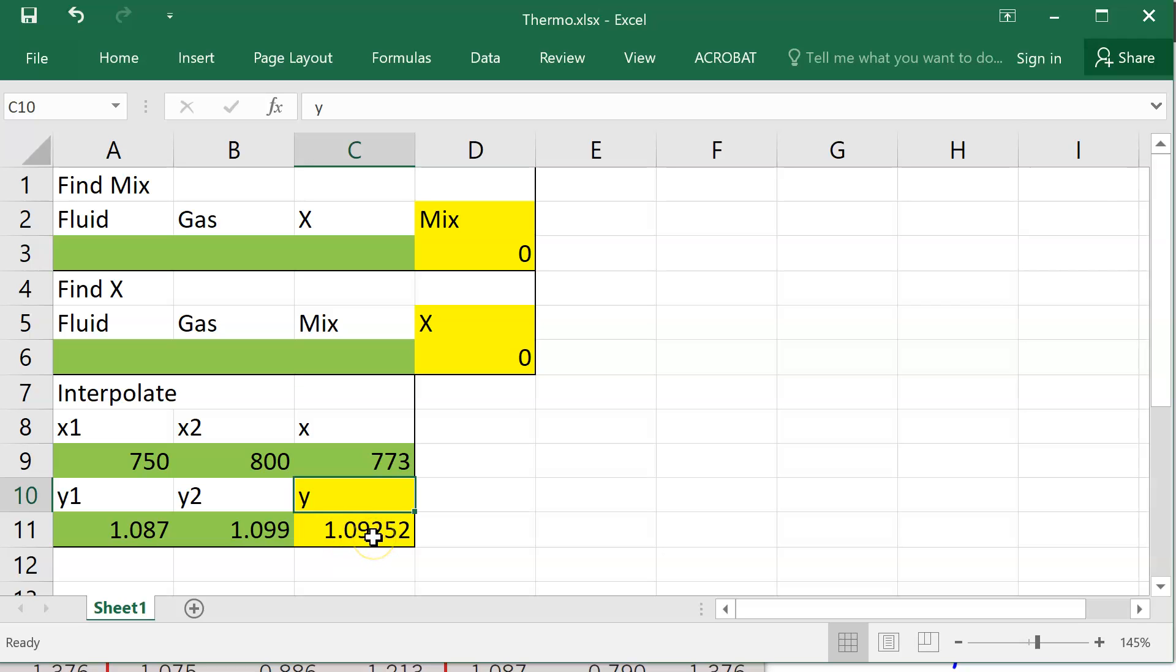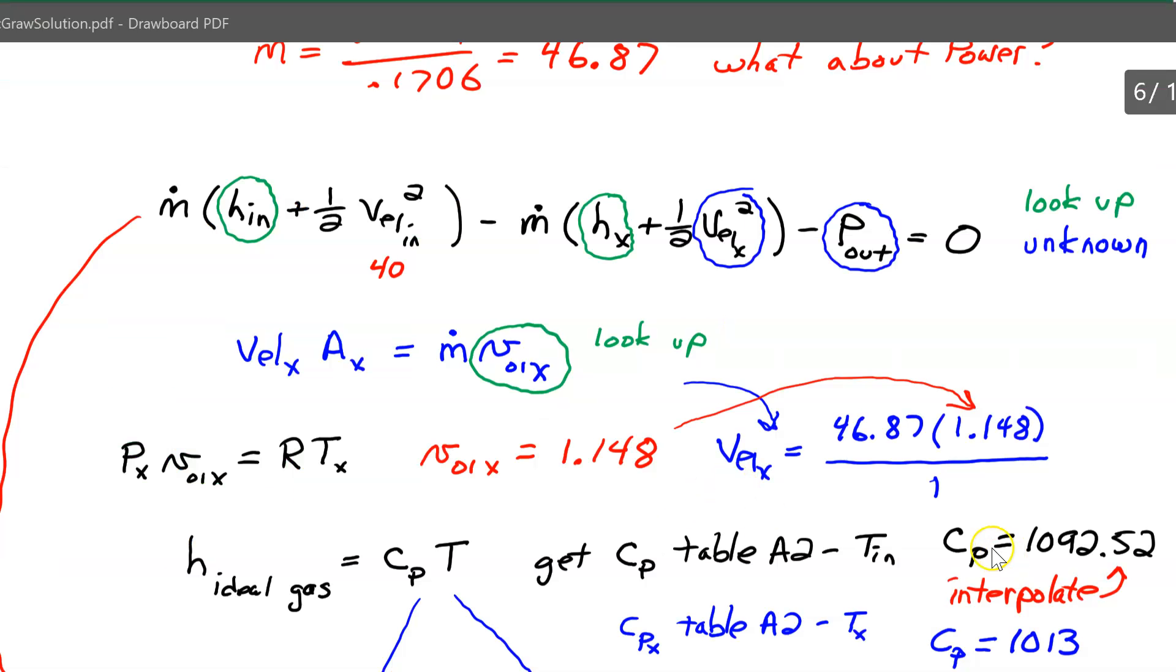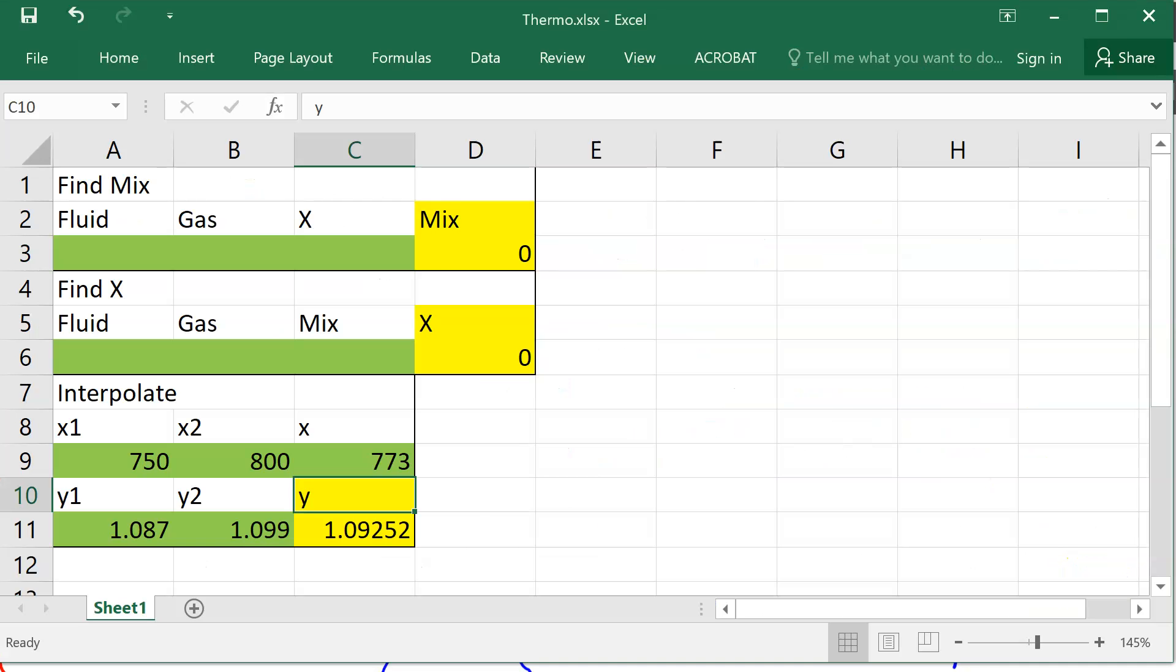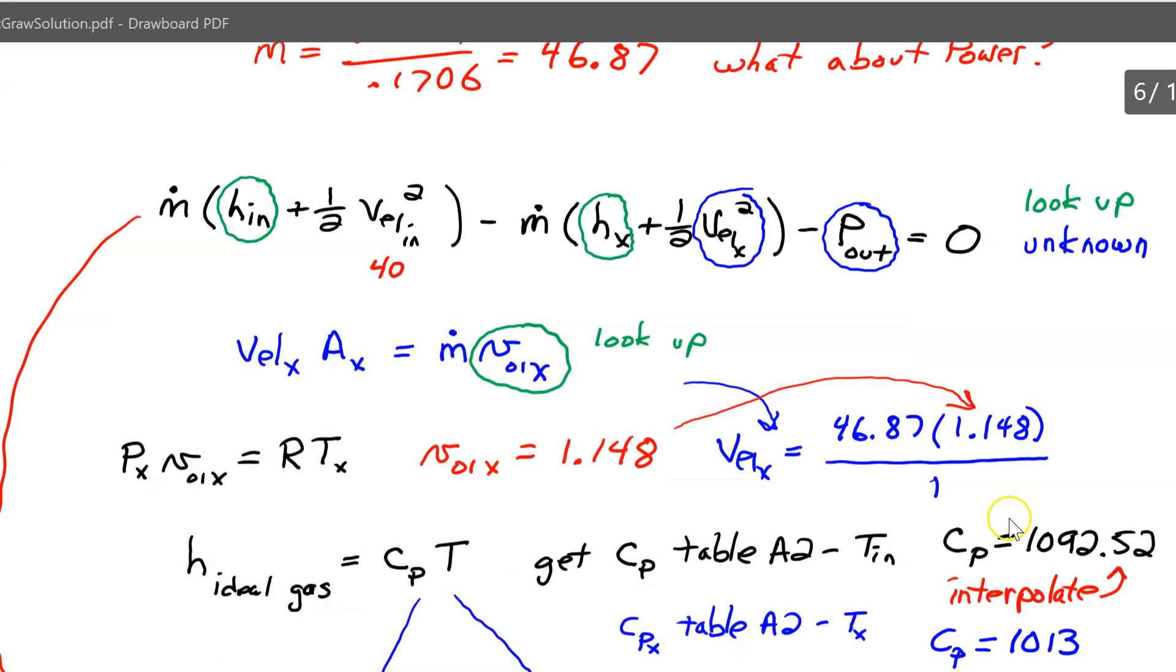But these are kilojoules. So you want to put that in as you multiply by 1,000. So it's 1092.5. Okay, so I'm back. Here's the 1092.5. I think that's what I said it was. 10925. Yes. 10925. 10925. Right.